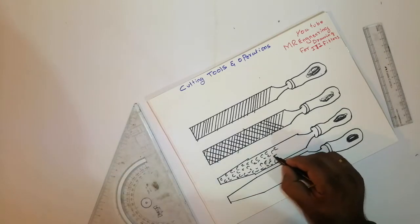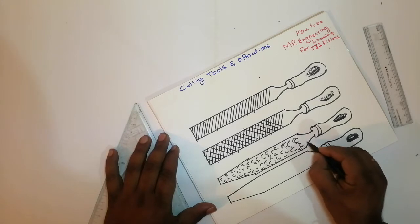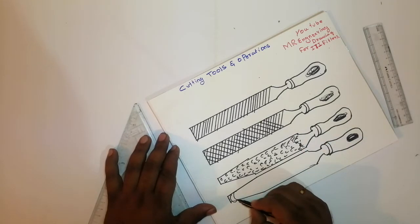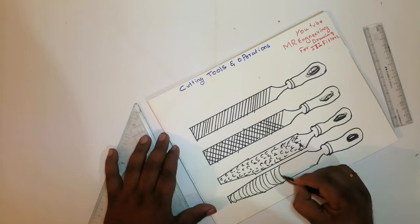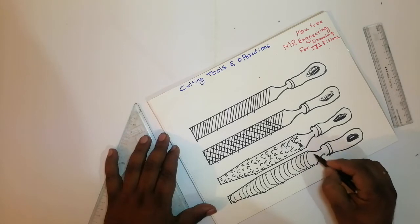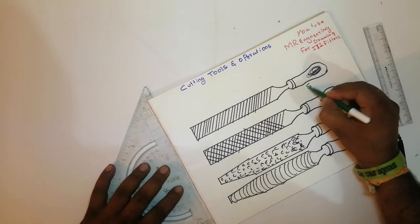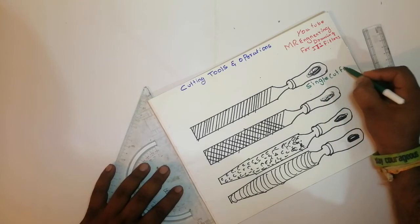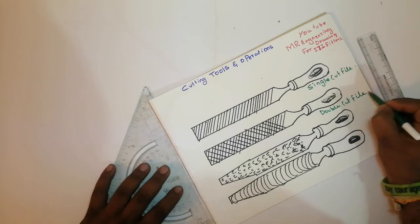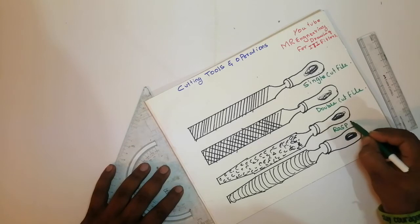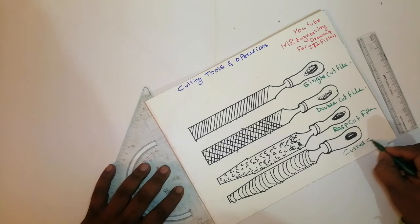These are all different types of cutting tools — every measurement is coming very neatly. This is called a raspcap file, then the karu. In the same measurement we can draw all four types of files. This is a karu cutting file, this is a raspcap file, this is a single cut file, this is a double cut file, this is raspcap cut file, and this is karu cut file.